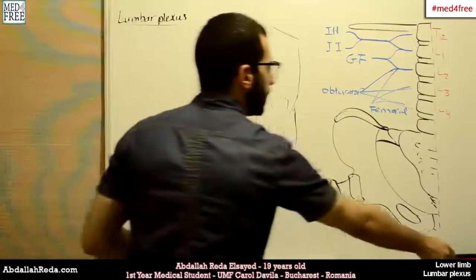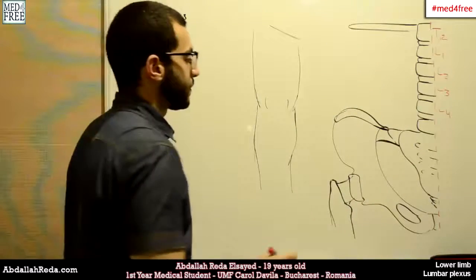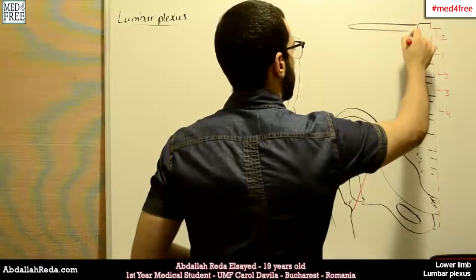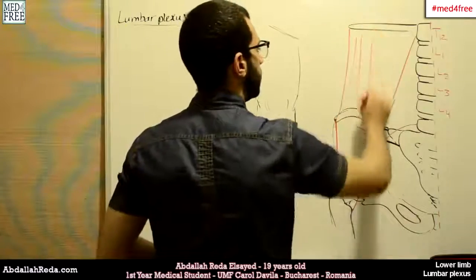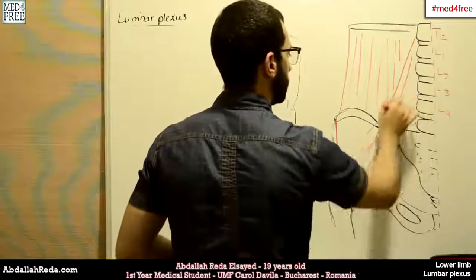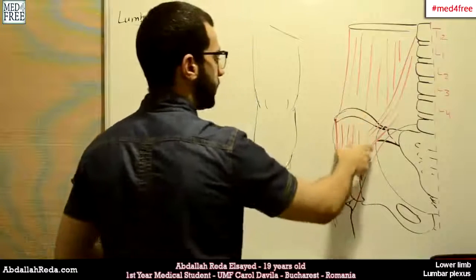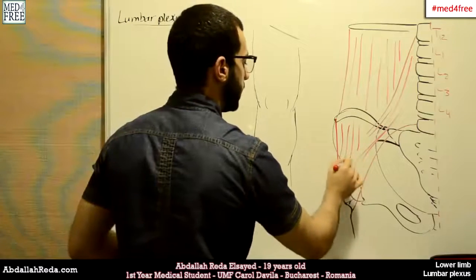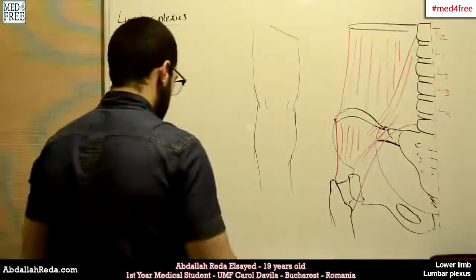Now let's see the course of these nerves. In this region, this muscle here is the quadratus lumborum muscle. This muscle in this region is psoas major, and the muscle that anastomoses with psoas major from this area is iliacus. Together they form the iliopsoas muscle. This is the pattern of muscles in this area.